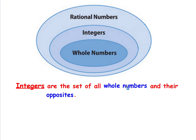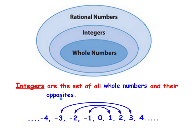Integers are all of the sets of whole numbers — one, two, three, four — and their opposites. So the opposite of the whole number one is negative one. The opposite of two is negative two. All of these together make up integers.